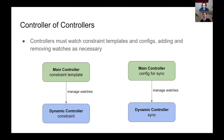Let's zoom in a bit and discuss how we interact with this dynamic watch manager. Gatekeeper has two sets of dynamic watches: one for constraints and the other to sync arbitrary data. For each one of these, we have a main controller and a dynamic controller. The main controller is responsible for telling the dynamic controller what to watch. The dynamic controller is a generic controller that can understand a duck-typed resource. One watches constraint templates and tells the watch manager which constraint kinds are available to watch. The other watches the config resource, where users tell Gatekeeper which resources they want to sync.